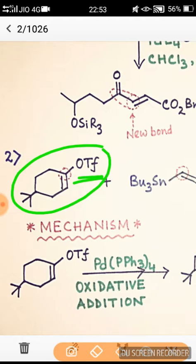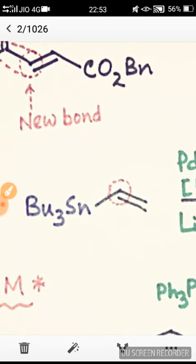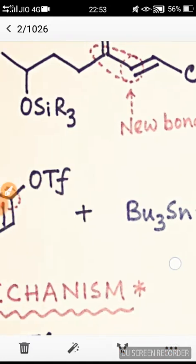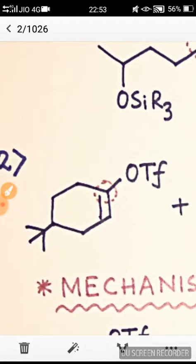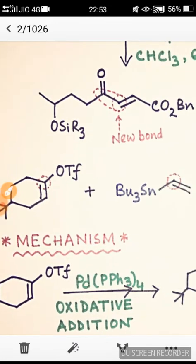Now this substrate reacts with the organotin compound, the vinyl stannane. This is the carbon on which substitution will occur or cross-coupling will occur between this organotin and this OTf. We will get the cross-coupling product of this carbon and this carbon.